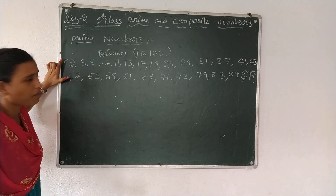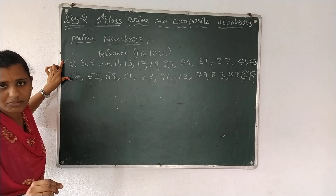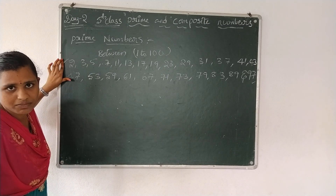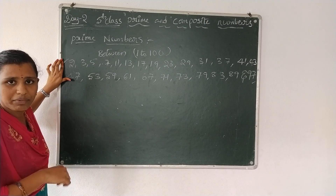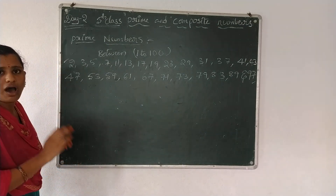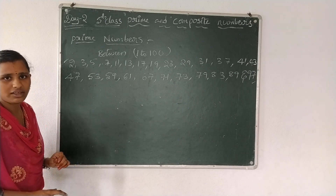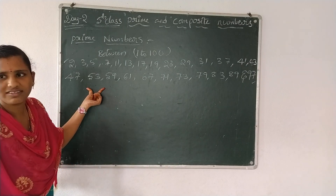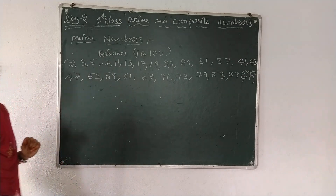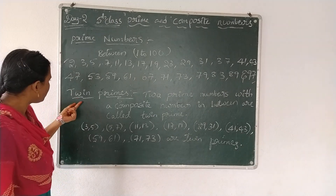Okay, understood today's topic? Write the prime and composite numbers separately and read them more than once. Practice today's class numbers of times. Load down these numbers in your notebook.